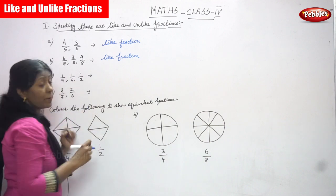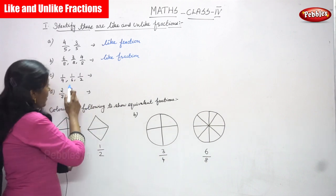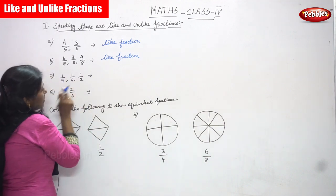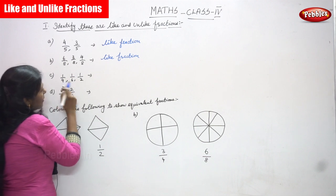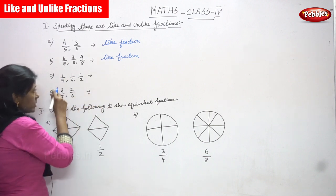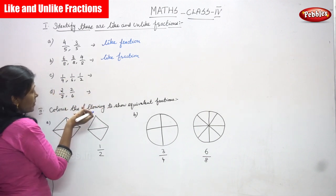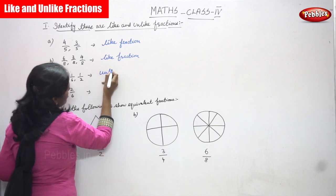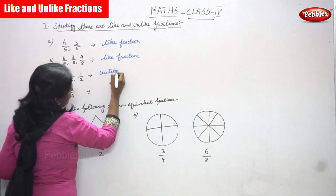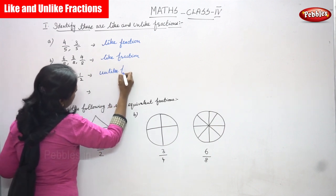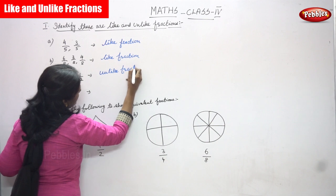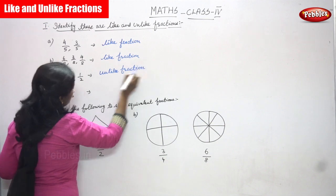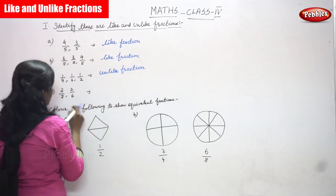Next one is 1 by 9, 1 by 6 and 1 by 2. Look at the denominators — all the denominators are different. So it is an unlike fraction. Denominators are not same, so it is an unlike fraction.